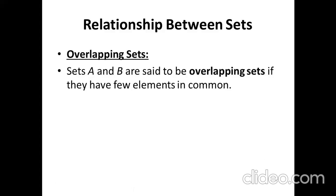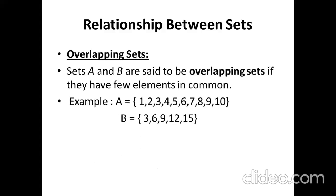Then we have overlapping sets. Sets A and B are said to be overlapping if they have few elements in common. For example, if A = {1, 2, 3, 4, 5, 6, 7, 8, 9, 10} and B = {3, 6, 9, 12, 15}, we can see that only a few elements — 3, 6, and 9 — are common. So the sets are overlapping. Students often confuse subsets and overlapping sets. For a subset, a complete set of elements is contained in the other. For overlapping sets, only a few elements are common — one set is not fully inside the other; if it were, it would be a subset.